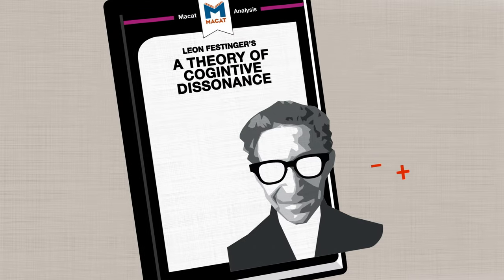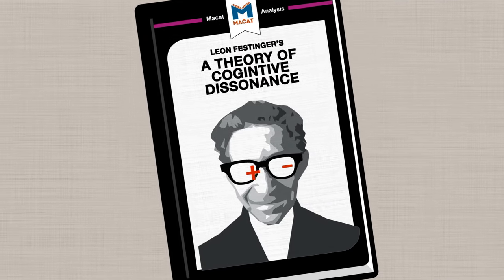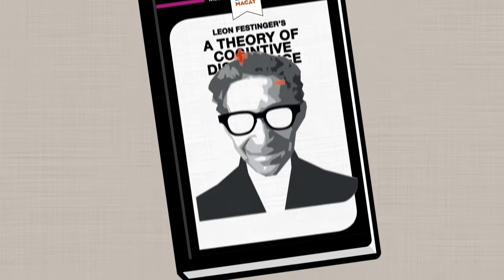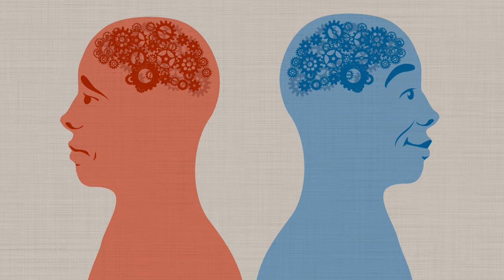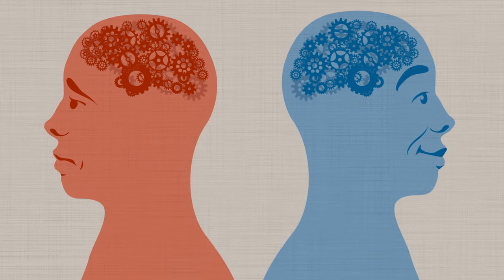And Leon Festinger, with his A Theory of Cognitive Dissonance, tried to explain not only the ways in which new information produces stress, but also why so many of us ignore messages that we don't want to hear.